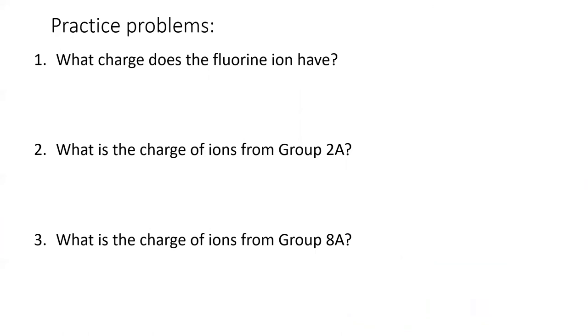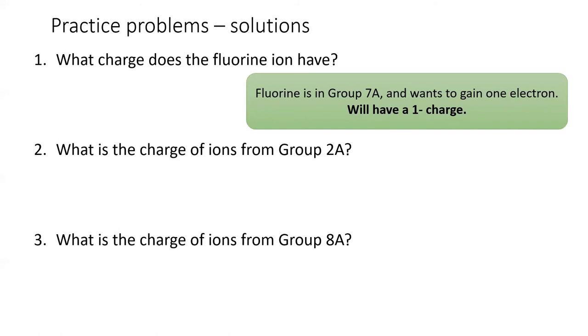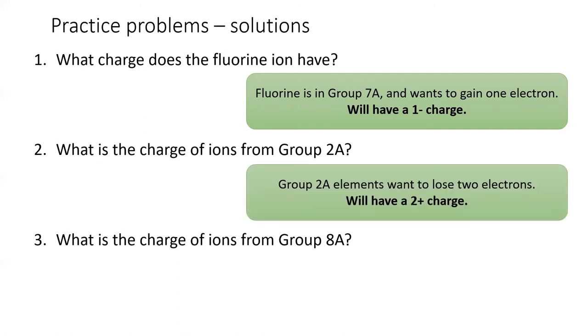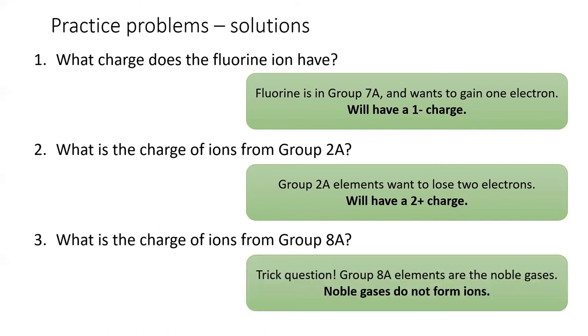Time for some practice problems. Pause the video and see if you can answer these questions. All right, here are the answers. Fluorine is in group 7A and only needs to gain one electron to become noble. It will have a one-minus charge. Group 2A needs to lose two electrons to become noble. Elements from this group will then have a two-plus charge. The last question, hopefully you caught this, it's a bit of a trick. Noble gases, which live in group 8A, already have a noble number of electrons. Thus, they do not form any ions and do not gain a charge.